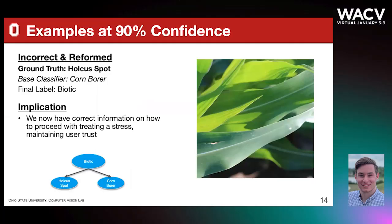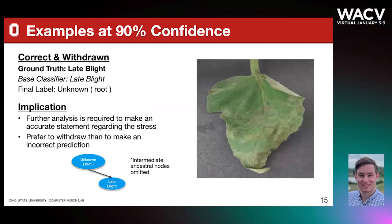If an example is originally predicted incorrectly and is reformed, we have achieved the best possible outcome, as we now have valuable and accurate information for managing a stress moving forward. For a small number of examples, they can be completely withdrawn to the root node. Whether the prediction was originally correct or incorrect, we are still benefiting from the approach.